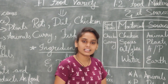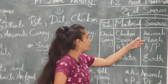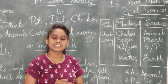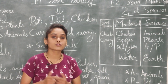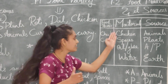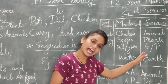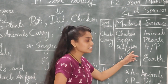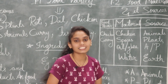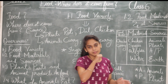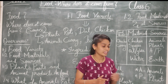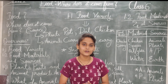इन सारी चीज़ों के sources plant and animals हैं। Chicken हमको hen से मिलता है — animals से। Spices यानी masala हमको plants के parts से मिलते हैं, जो हम 1.3 में detail में पढ़ेंगे। Oil और घी — घी गाय के milk के product से extract करते हैं, और oil हमको plant के seeds से मिलता है। Water earth से naturally मिलता है।